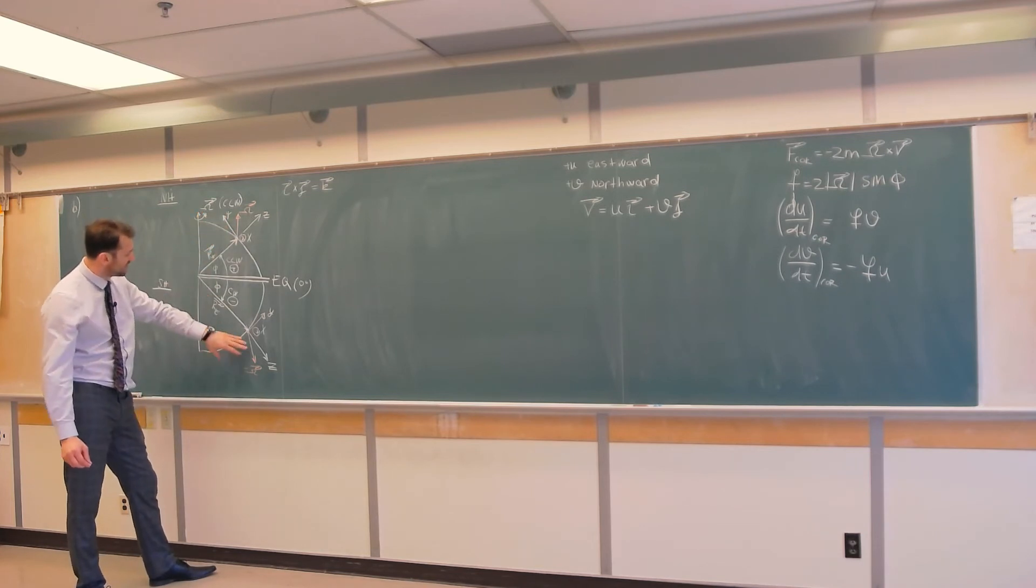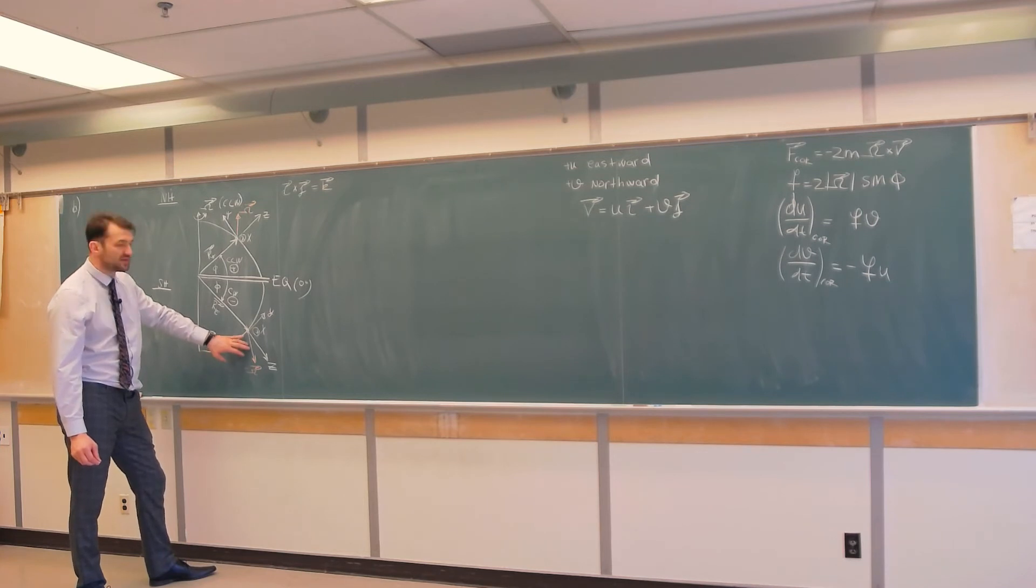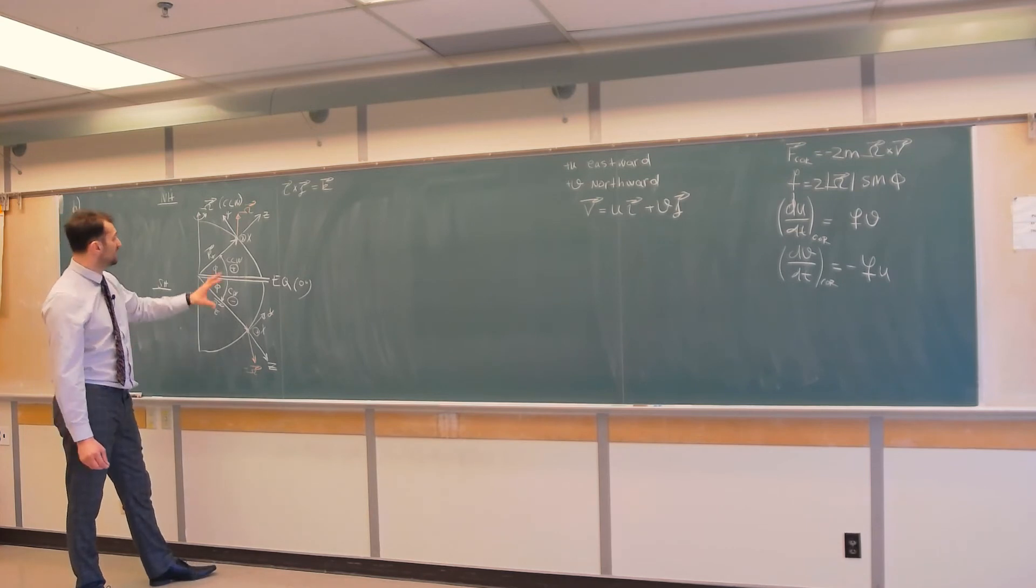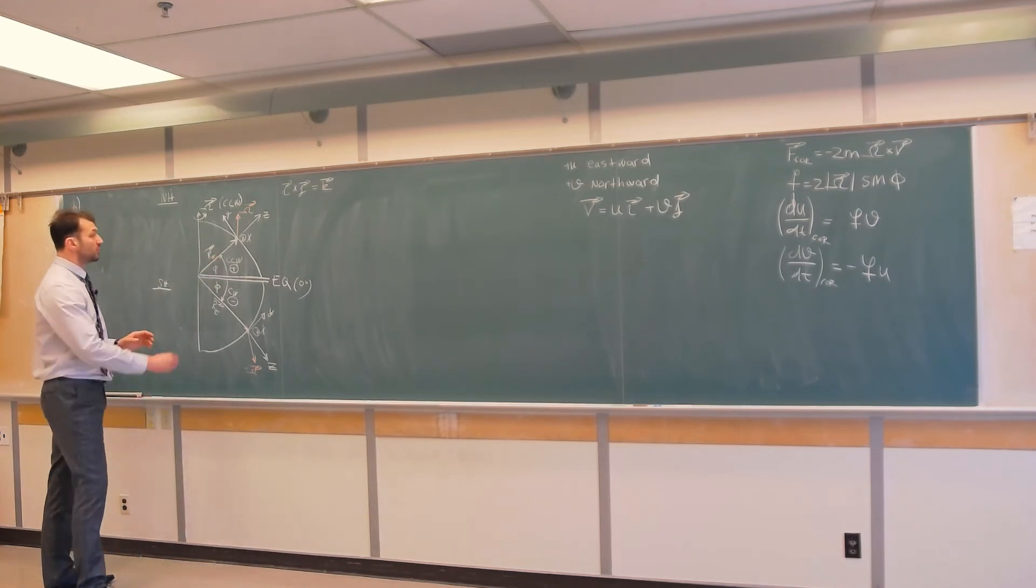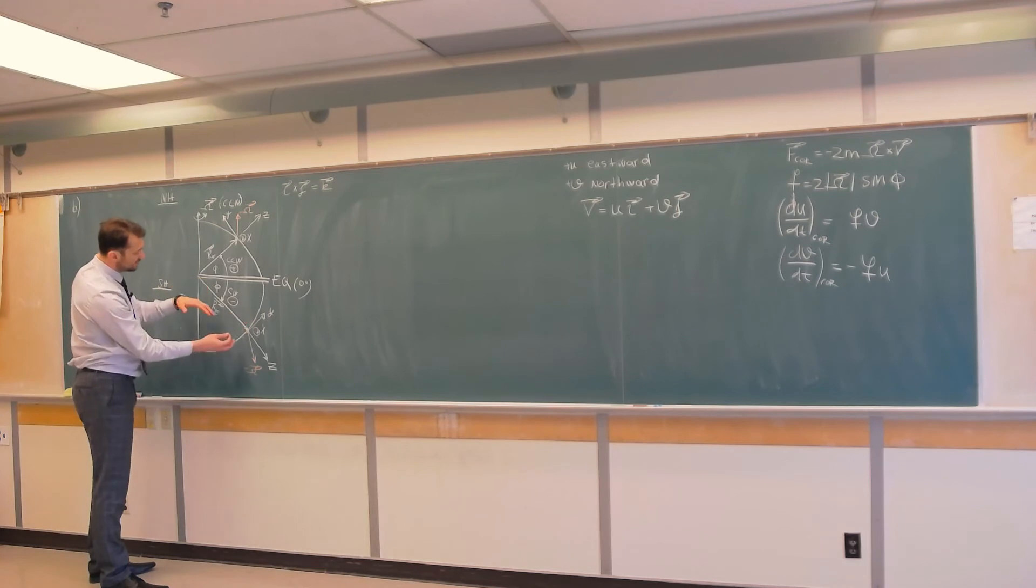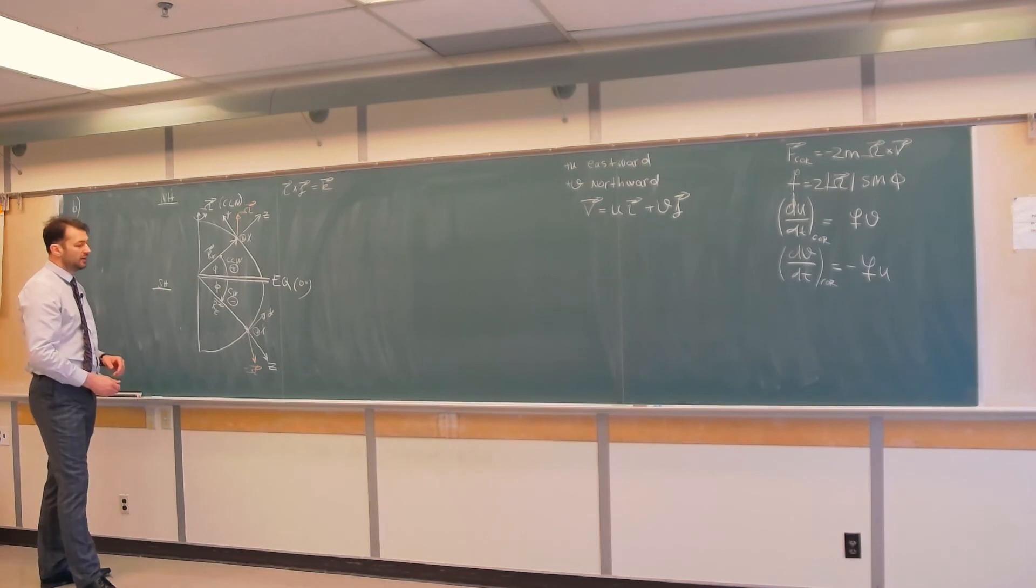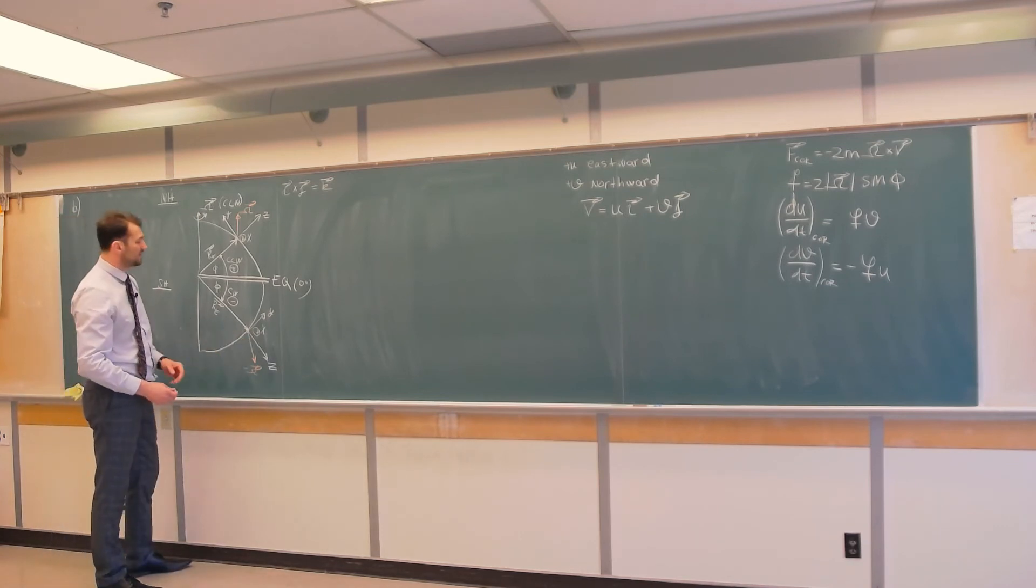And that's why, if Coriolis force deflects parcels in one direction in the northern hemisphere, because of the opposite sense of rotation above the southern hemisphere, the deflection is opposite to whatever it was in the northern hemisphere. And in the northern hemisphere, deflection is to the right, which means the opposite sense of rotation of our planet results in the deflection that is towards the left in the southern hemisphere.